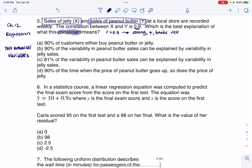between peanut butter sales—I'll just abbreviate this PB sales—and jelly sales. So let me go look for that explanation.